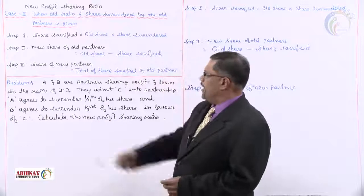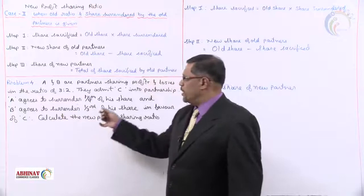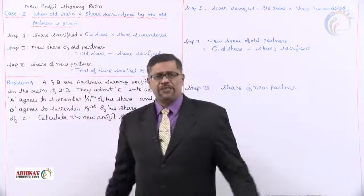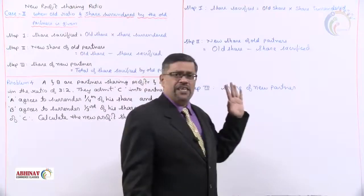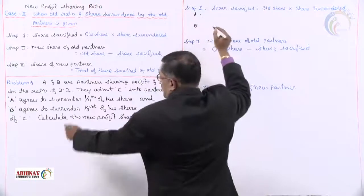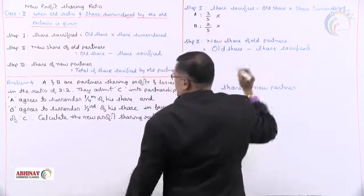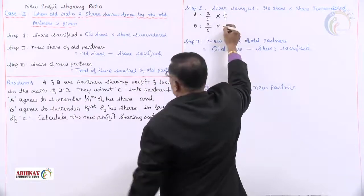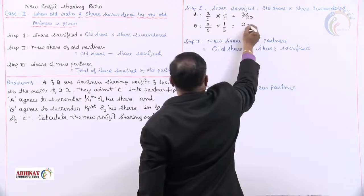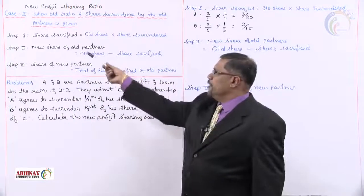Problem: A and B are partners sharing profits and losses in the ratio of 3:2. They admit C to the partnership. A agrees to surrender one fourth of his share and B agrees to surrender one third of his share, in favor of C. Calculate the new ratio. Step 1: Share sacrifice = old share × share surrendered. Old ratio 3:2 means old shares are 3/5 and 2/5. A surrenders 1/4 and B surrenders 1/3. So A's sacrifice = 3/5 × 1/4 = 3/20, and B's sacrifice = 2/5 × 1/3 = 2/15.